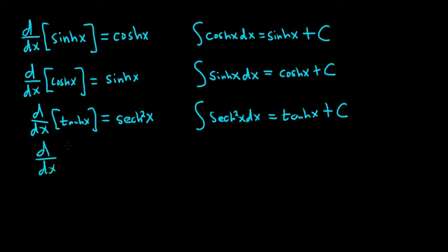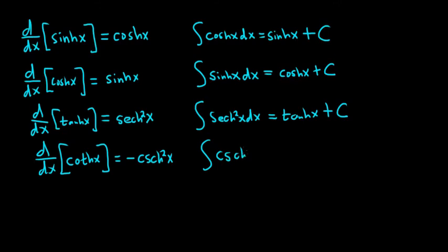If you take the derivative with respect to x of the hyperbolic cotangent of x, you get negative hyperbolic cosecant squared of x. Very similar to what you see with regular trig functions — the derivative of cotangent is negative cosecant squared. This means if you integrate the hyperbolic cosecant squared of x with respect to x, you can move the negative over to the left-hand side, and you would get negative hyperbolic cotangent x plus our constant C.